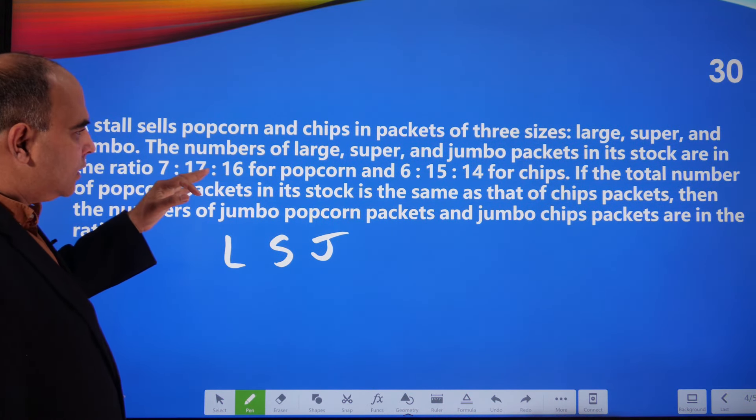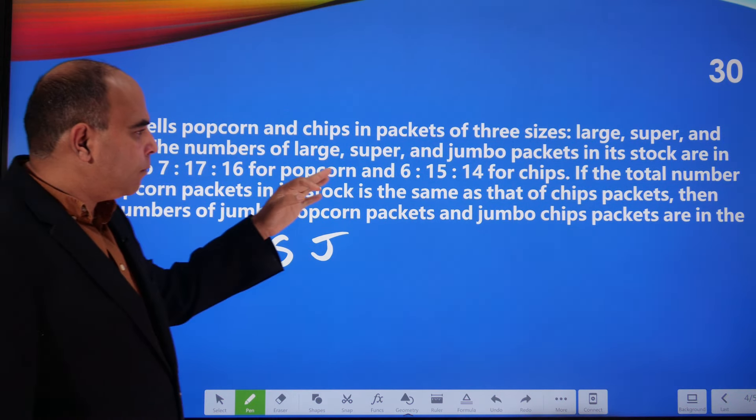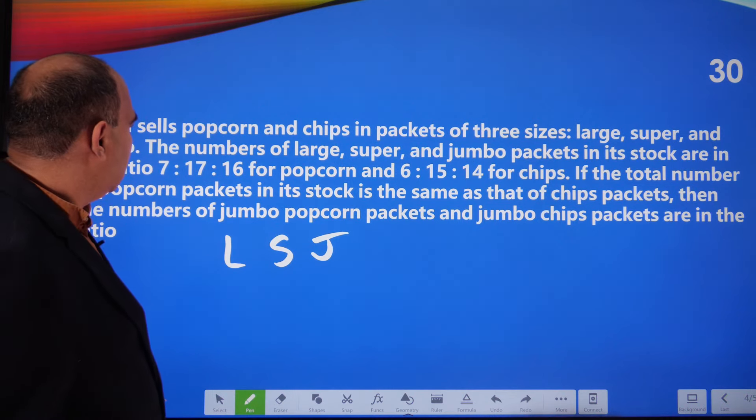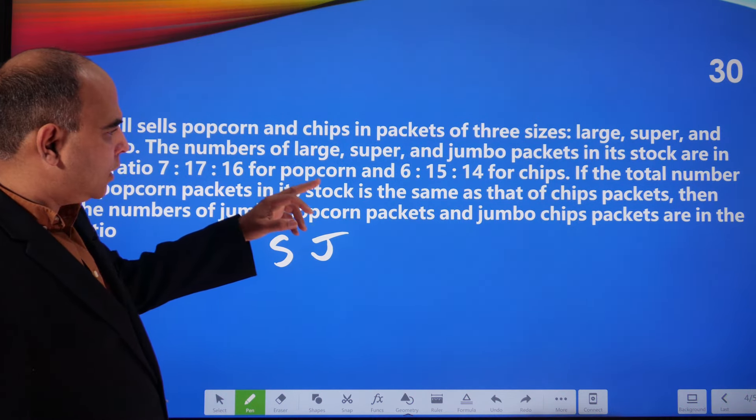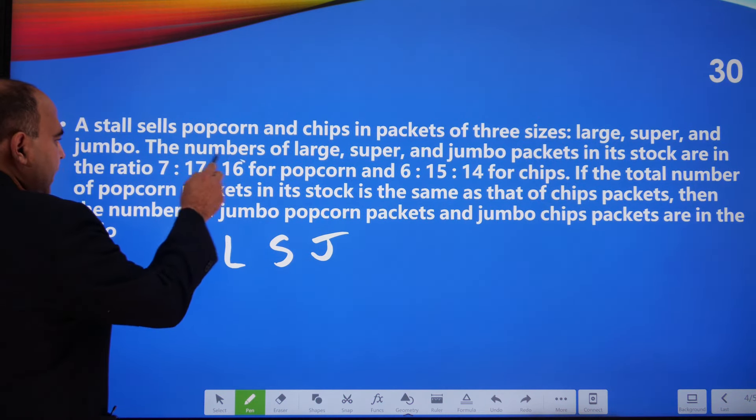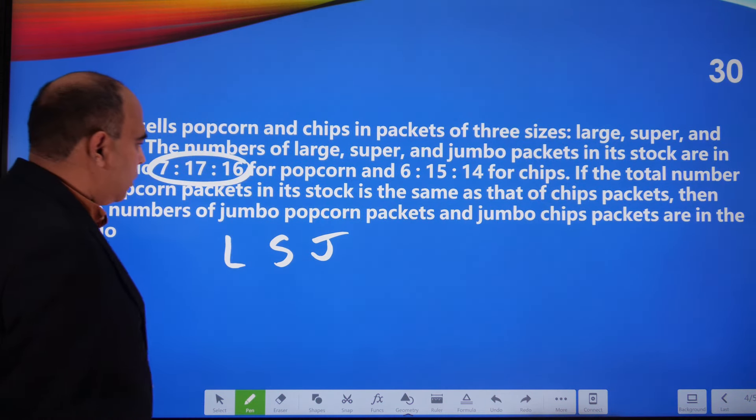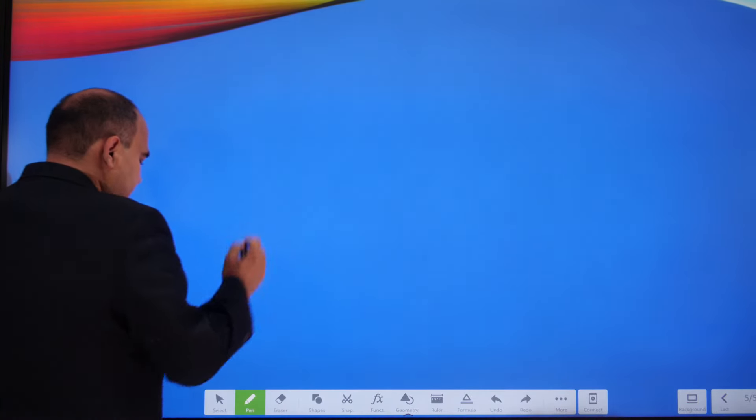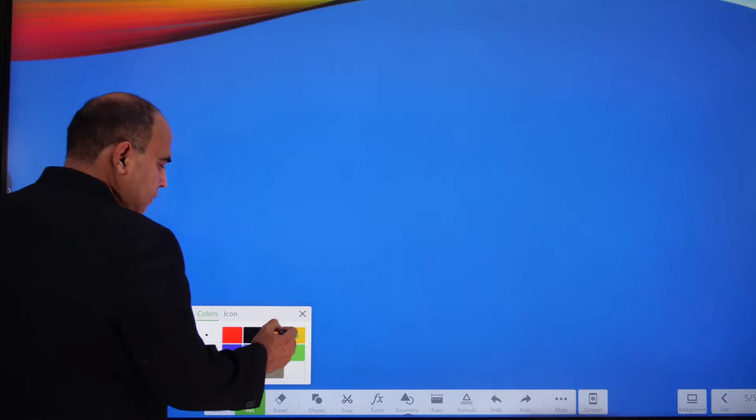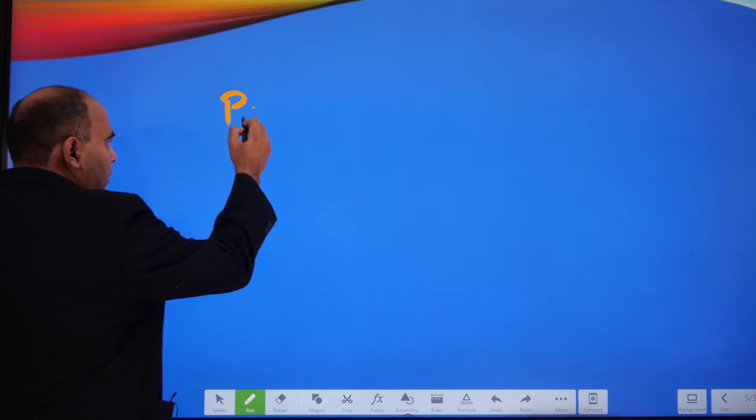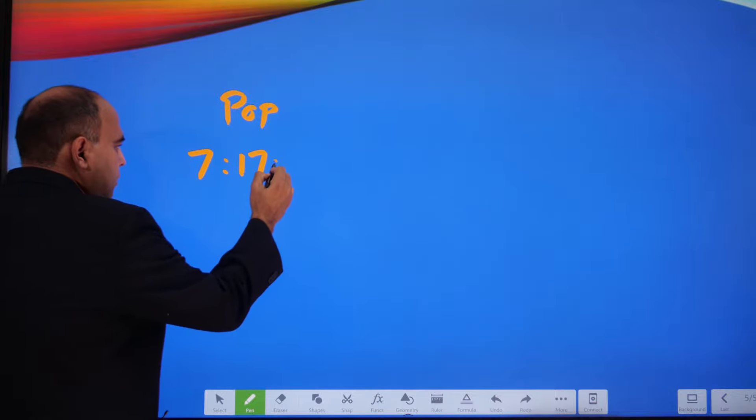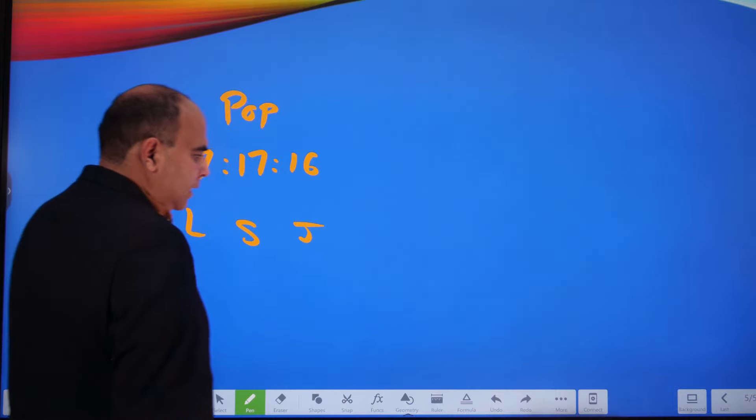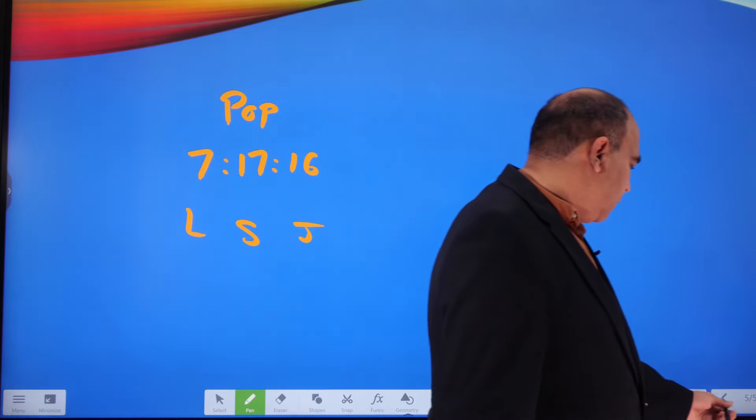Coming back to this question: a stall sells popcorn and chips in packets of three sizes. The number of large, super, and jumbo packets in the stock are in the ratio 7:17:16 for popcorn.